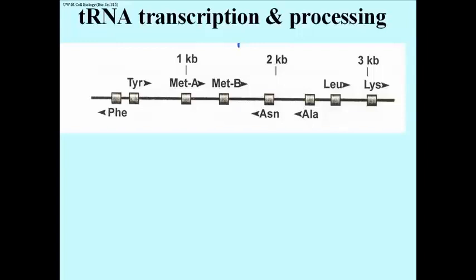Transfer RNA genes are also dispersed on different chromosomes in eukaryotes, though they can often be found in clusters as shown here.